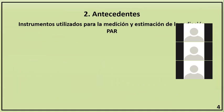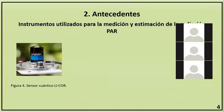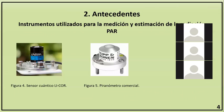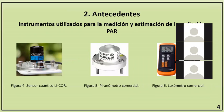Los únicos instrumentos diseñados específicamente para la medición directa de la radiación PAR son los sensores cuánticos, como el mostrado en la imagen. Sin embargo, su uso no es muy extendido debido a que son instrumentos muy especializados. Por ello, muchas veces se utilizan otro tipo de instrumentos para estimar la radiación PAR, como los tiranómetros, que son sensores de radiación, y los luxómetros, que son sensores fotométricos.